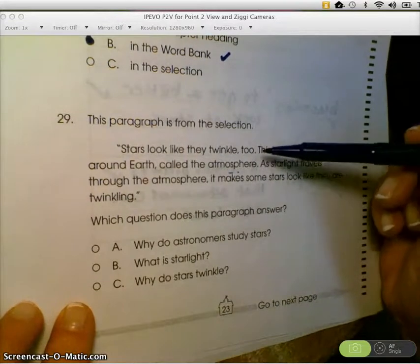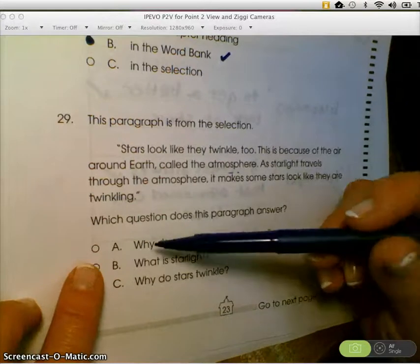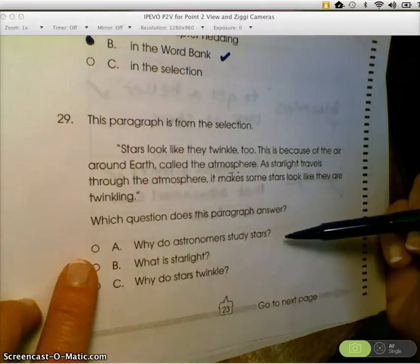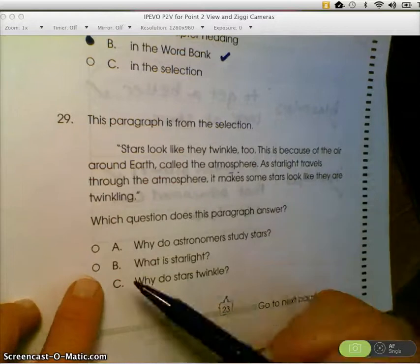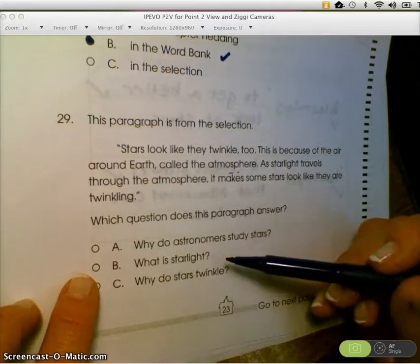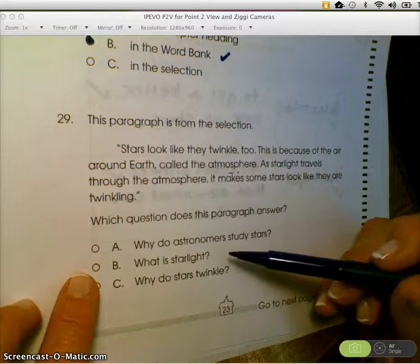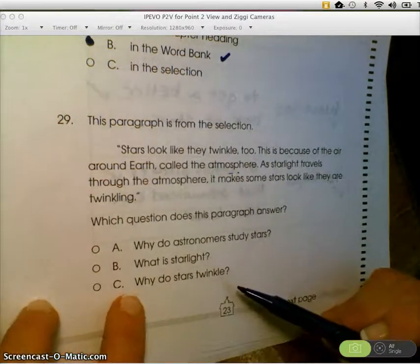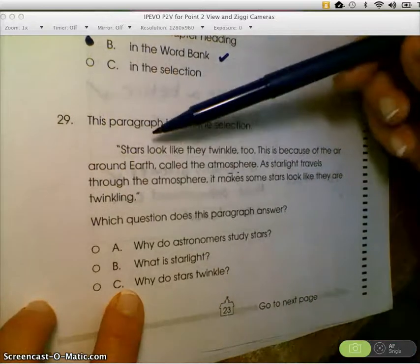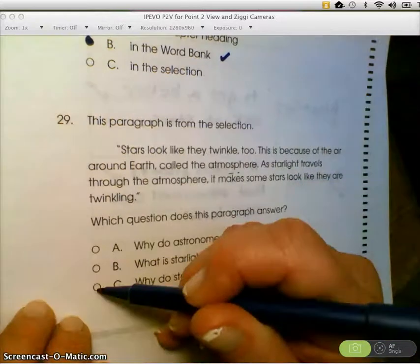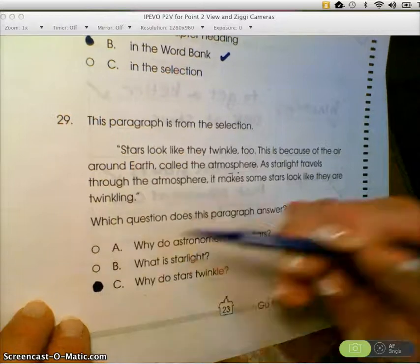A paragraph about stars twinkling. So does it answer why do astronomers study stars? Did it tell me why? Not at all. Here's a dud. Did it tell me what starlight is? Nope. It wasn't talking about what starlight is. It was talking about why they twinkle. Or does it tell me, see, why do stars twinkle? I like that one. Go back up and double check. Stars look like they twinkle because of the air around Earth. There's my why. Boom. Love it.